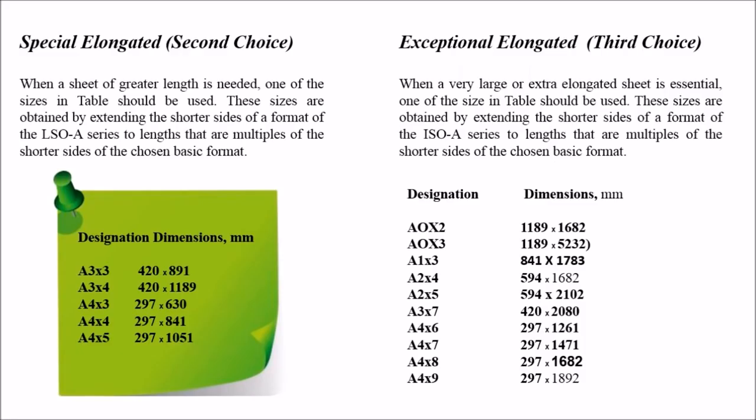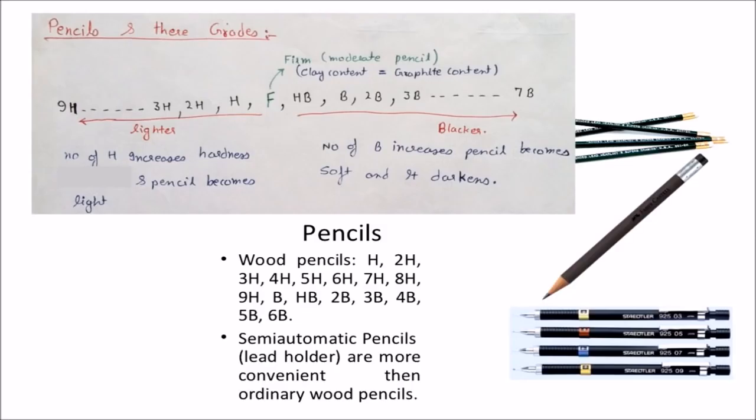The second type of sheets are Special Elongated Sheets which are larger in size if the length to width ratio is a numerical multiple. Exceptional Elongated Sheets are larger than ISO A type sheets and hectic to fold on.